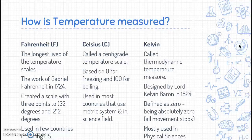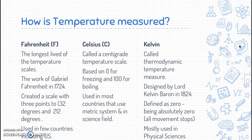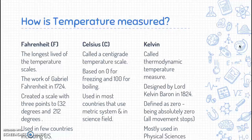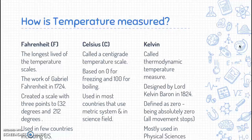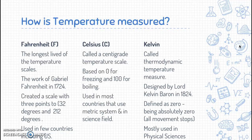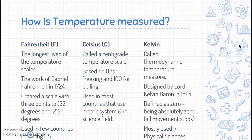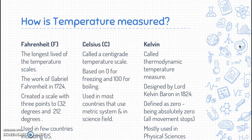Next is Celsius. It is called a centigrade temperature scale. It is based on zero for freezing and 100 for boiling. It is used in most countries today, especially those that use the metric system and also in the science field. Lastly there's a measurement of Kelvin. It is called the thermodynamic temperature measurement system. It was designed by Lord Kelvin Baron in 1824. He defined zero as the absolute zero, meaning all movement in particles stops. This is mostly used in the physical sciences world.